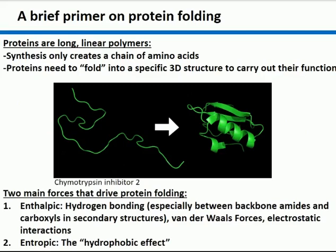It always helps me to understand the principles behind something. Some basic principles of protein folding: proteins are essentially long linear polymers, but the linear polymer in and of itself is not generally functional. It has to fold — go from a long linear polymer to a three-dimensional structure. It's that three-dimensional structure, or usually just a tiny portion of it — the actual functional bit — that you're looking for.